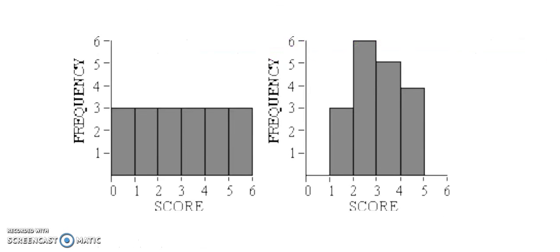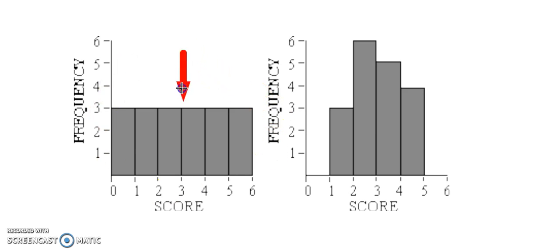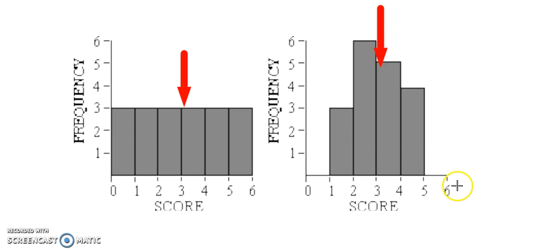Suppose your class just took a math test, and it was scored out of six. Here we have one class's histogram and the second class's histogram. If you look at these and try to figure out what the center is — the average, the typical score — in the first one, it's kind of hard to tell. It looks like the center is right around three, but since the scores were uniformly distributed, it's kind of hard to tell. In the second one, the average score, the center score, is probably right around three points out of six. But we're kind of guessing. There's got to be a way to give an exact answer for what is the center of that distribution — what did the average person get?